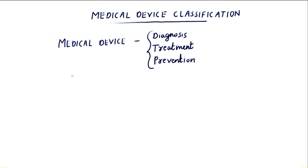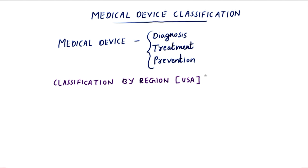FDA recognizes three classes of medical devices based on the level of control necessary to assure safety and effectiveness of the device, or based on the risk involved when it is used in the patient. FDA established classification of around nearly 1,700 different medical devices based on the intended use and risk involved. As the risk increases, the level of regulatory control also increases.